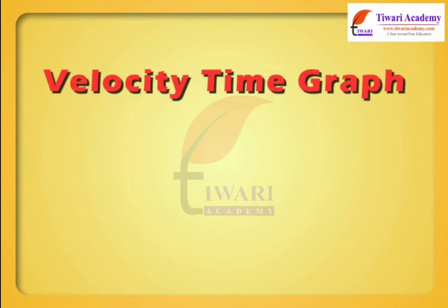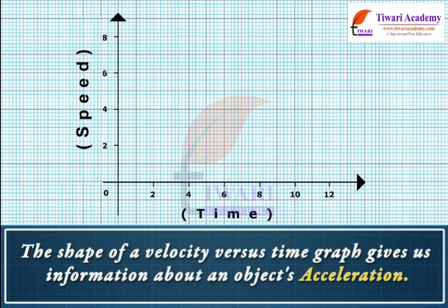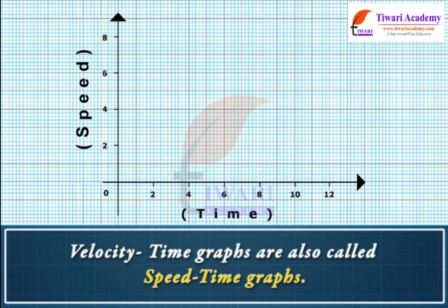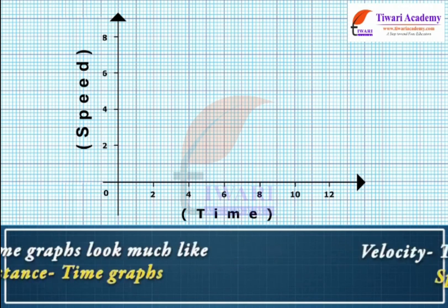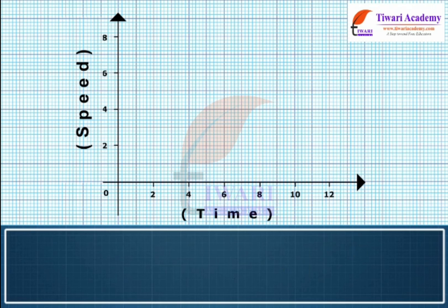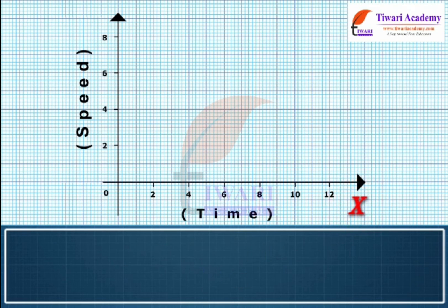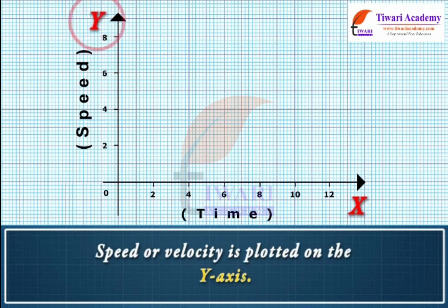Velocity-time graph. Dear students, the shape of a velocity versus time graph gives us information about an object's acceleration. Velocity-time graphs are also called speed-time graphs. Speed-time graphs look much like distance-time graphs. Time is plotted on the x-axis, and speed or velocity is plotted on the y-axis.